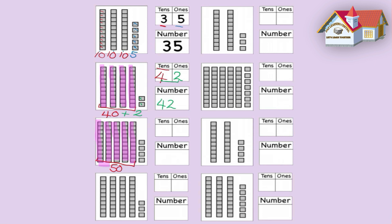How many tens do we have? Five — you are right. 1, 2, 3, 4, 5. We have five sticks of tens. How many ones do we have? Let's count them together: 1, 2, 3, 4. How many ones do we have? That's right, it is four. Fifty-four. Well done. If you look at that number, it makes 54.